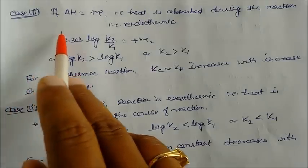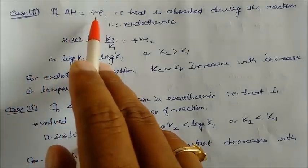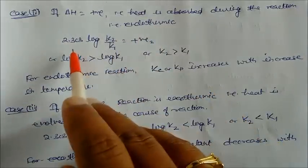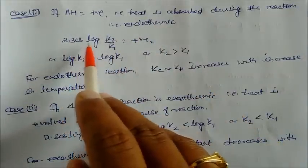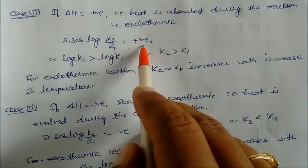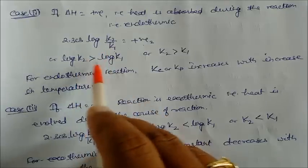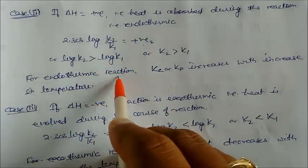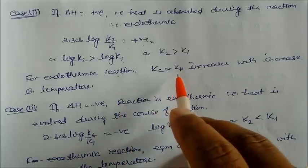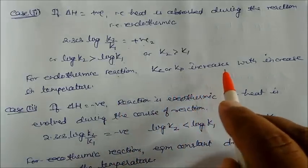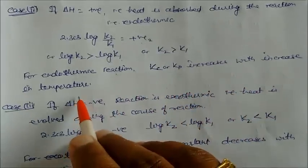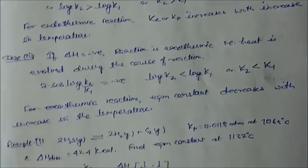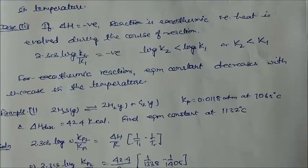Case two: if ΔH is positive, heat is absorbed — the reaction is endothermic. Then 2.303 log(K2/K1) is positive, meaning K2 > K1. For endothermic reactions, Kc or Kp increases with increasing temperature.